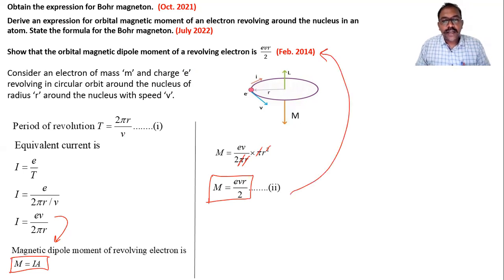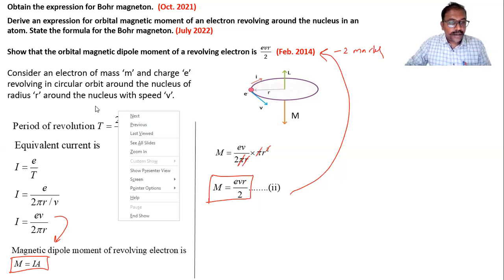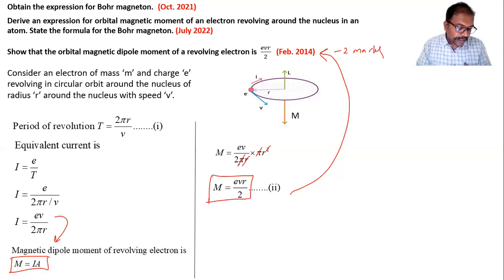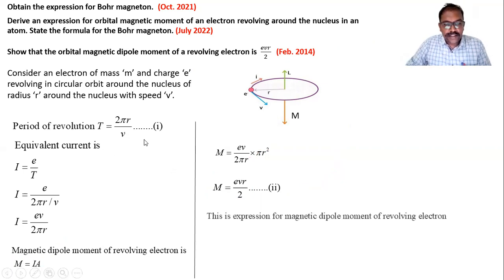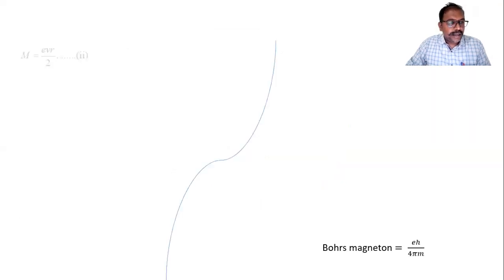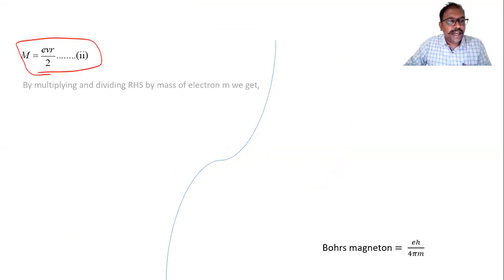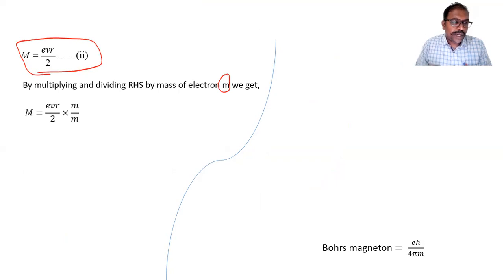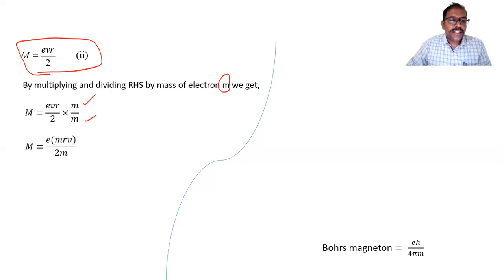This is a two-mark question. For the three-mark questions, we continue further. We take the expression for magnetic dipole moment M = evr/2 and multiply and divide the right-hand side by the mass of the electron m. Rearranging the terms, we can write M = e(mvr)/(2m).